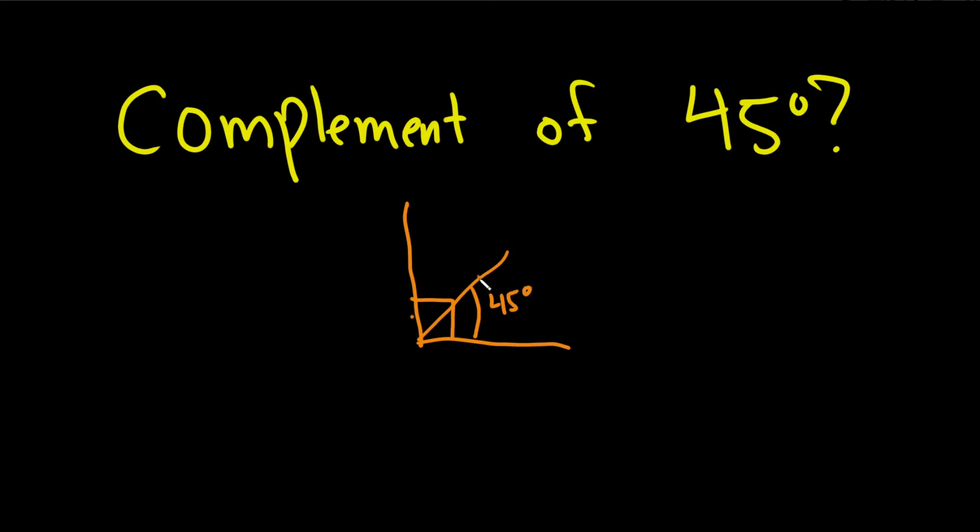So how many more do you need to get 90? Well, 45 more, right? Because 45 plus 45 is 90. So the complement of 45 is just 45, and that's because complementary angles are angles that add to 90.